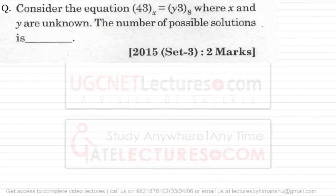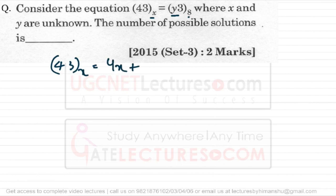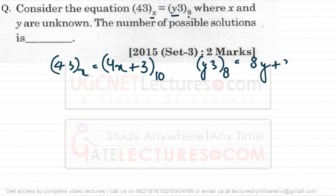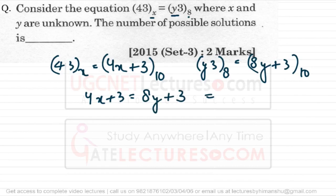Look at the next question. You are given that 43 in base x equals y3 in base 8, where x and y are unknown, and they ask for the number of possible solutions. Convert both to base 10: 43 in base x becomes 4x + 3, and y3 in base 8 becomes 8y + 3. Equating these: 4x + 3 = 8y + 3, which simplifies to x = 2y.